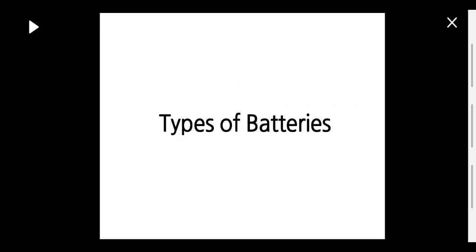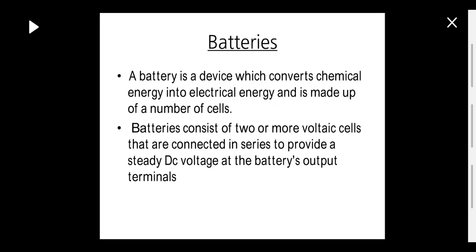Good morning. Today we are going to discuss one more topic in the fifth unit — electrical installation. The topic is types of batteries. Batteries are devices which convert chemical energy to electrical energy. There are two types: rechargeable and non-rechargeable batteries. A battery is made up of a number of cells connected in series or parallel to provide steady DC voltage at the output terminals.